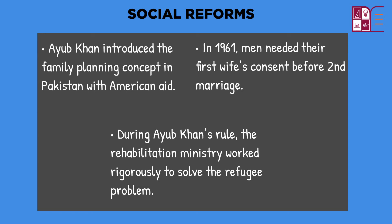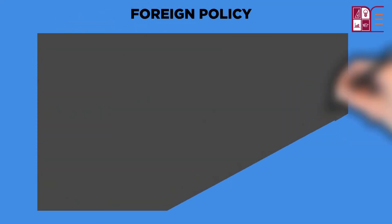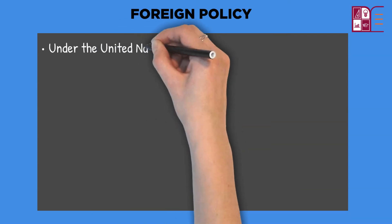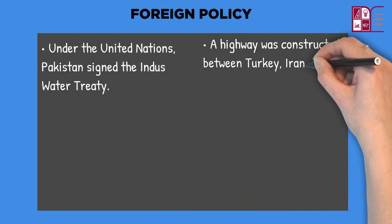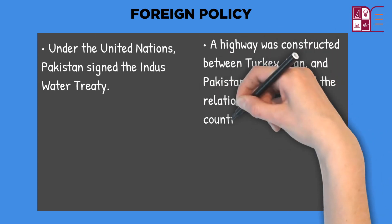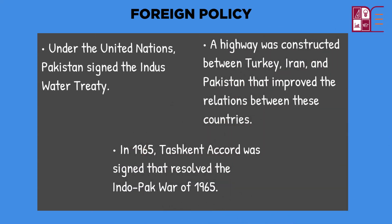Foreign Policy: Under the United Nations, Pakistan signed the Indus Water Treaty. A highway was constructed between Turkey, Iran and Pakistan that improved relations between these countries. In 1965, the Tashkent Accord was signed, which resolved the Indo-Pak War of 1965.